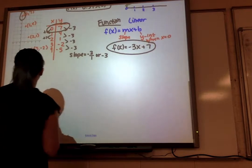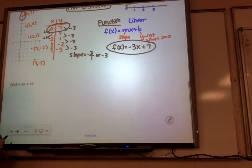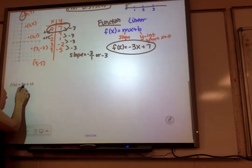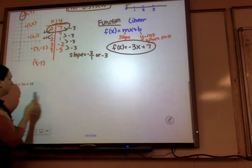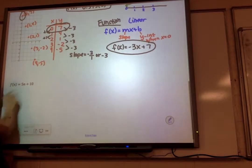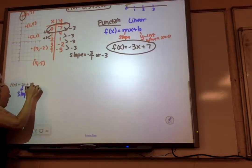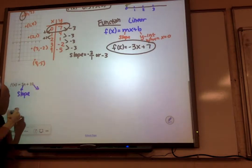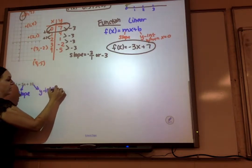Alright, we've got one more. I need to recognize this as a linear function, where our variable is n. So it's just like what we wrote, except now our x's are n's. So I need to recognize the number by n is my slope, and then my number over here by itself is my y-intercept.